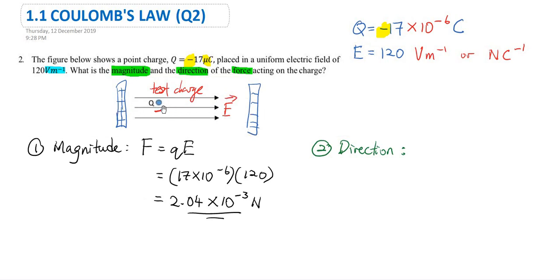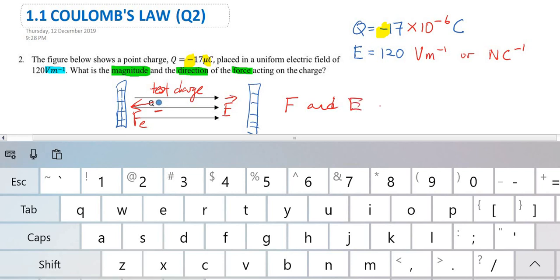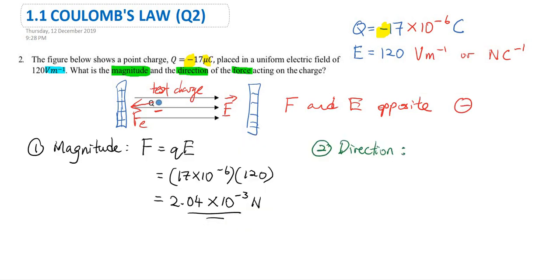What is the direction of the force acting on this negative test charge? Since it is a negative charge, it is attracted to the positive plate. Also, for a negative test charge, the force F and the electric field E are in opposite directions. If it were a positive charge, they would be in the same direction. For a negative test charge, F and E are opposite.